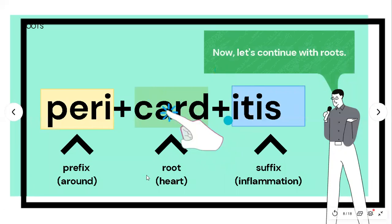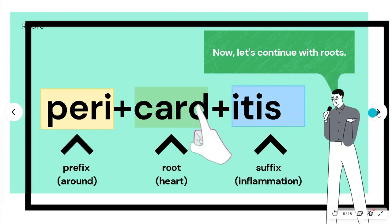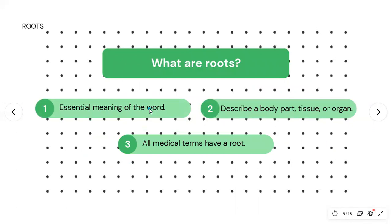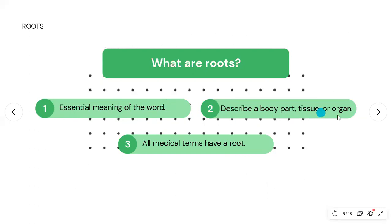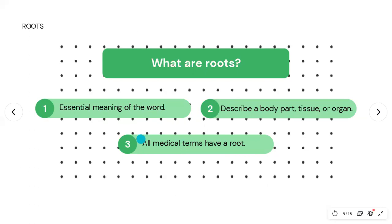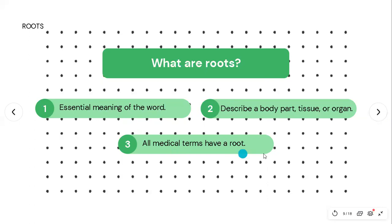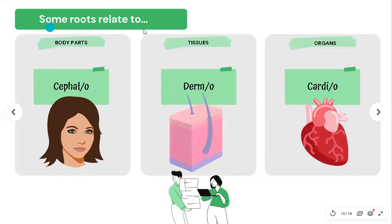Now we look at the next part of the word 'pericarditis': the root, which in this example is 'card.' You need to know three things about roots. First, they convey the essential meaning of the word — they are the essence of the word. Second, they usually describe a body part, tissue, or organ. Third, all medical terms have a root.